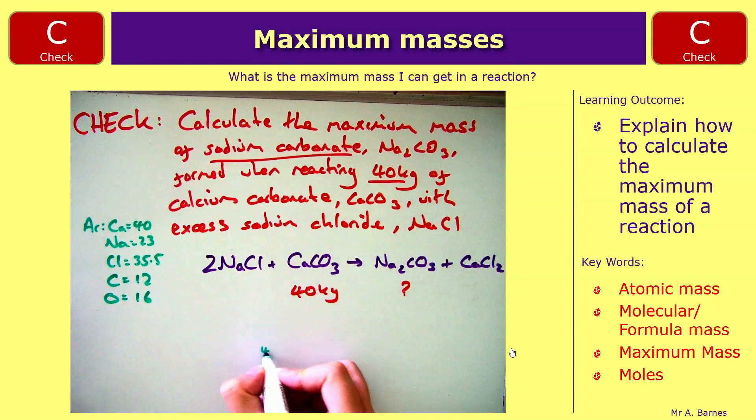So calcium carbonate, I have 40 for calcium, 12 for carbon, and 3 times by 16, which is 48, for my oxygen. So I need to add all of those together. And that gives me 100.